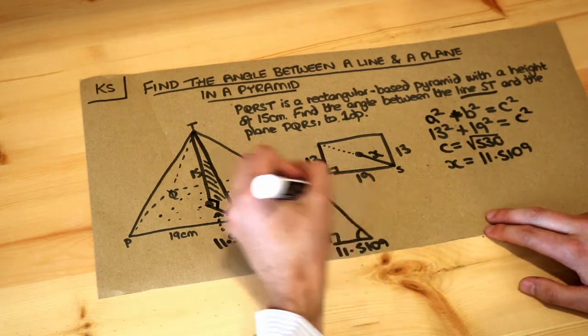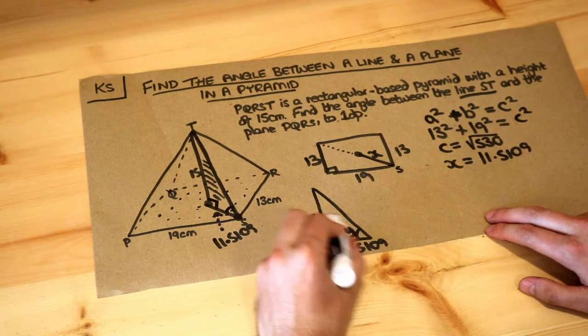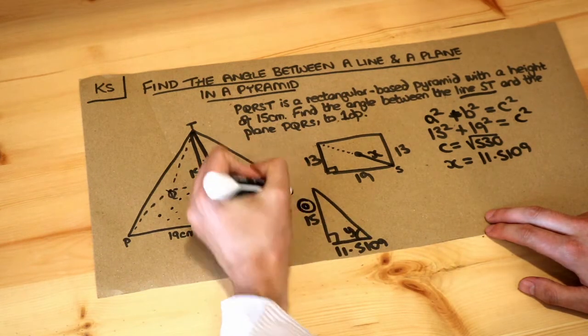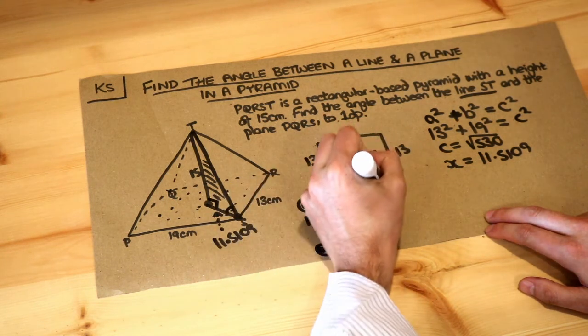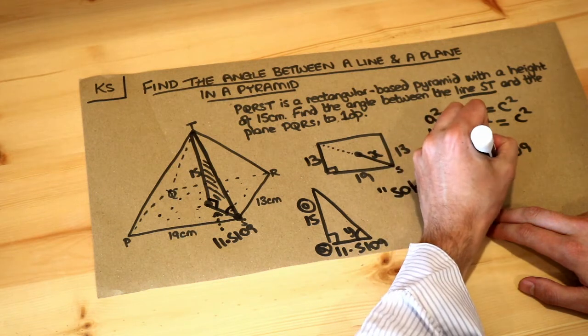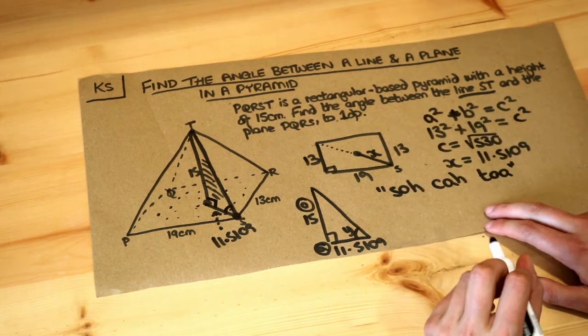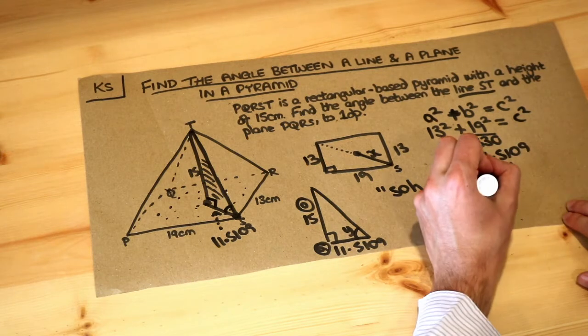Now how do we find this angle here? Well let's give it just a label, call it Y or something. Now this side is opposite that angle, so it's the opposite O. And this side is adjacent to that angle, so it's A. And remember SOHCAHTOA, that allows us to work out whether we use sine, cos, or tan. Well when involving the O and the A, that's here, O and A. So we're going to use tan.